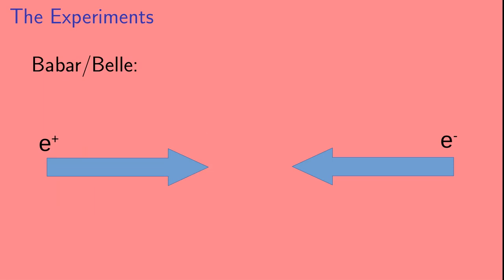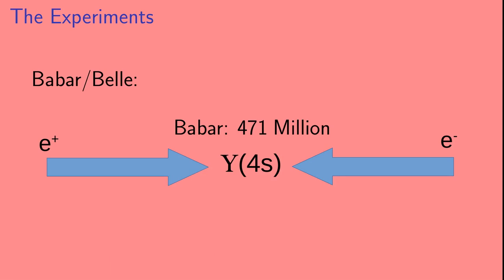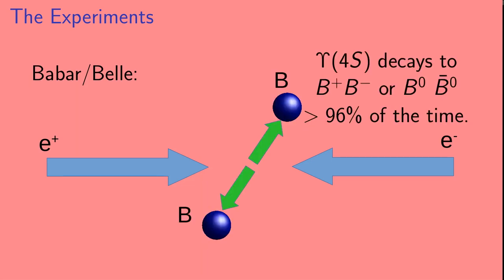Babar and Belle collide electrons and positrons. They collide them at a center of mass energy of 10.58 GeV. At this energy, you can produce a particle called the Upsilon-4S. Babar produced 471 million of these Upsilon-4S particles. And Belle produced 772 million of them. The Upsilon-4S particle decays to either charged or neutral B mesons more than 96% of the time. So Babar and Belle produced a lot of B mesons.